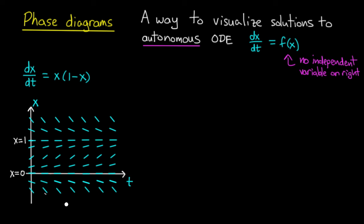Now phase diagrams are kind of related to slope fields, so I'll start by drawing the slope field for this differential equation. I'll remind you how to draw the slope field. You pick a point in the tx plane, and you imagine that you have a solution passing through that point.